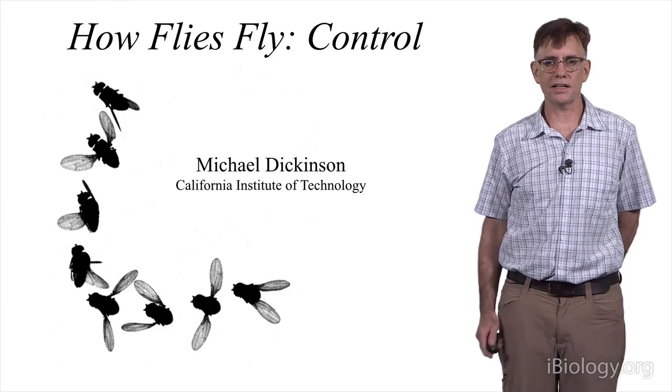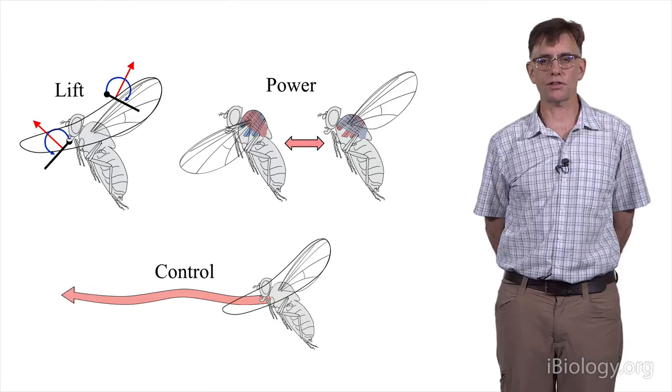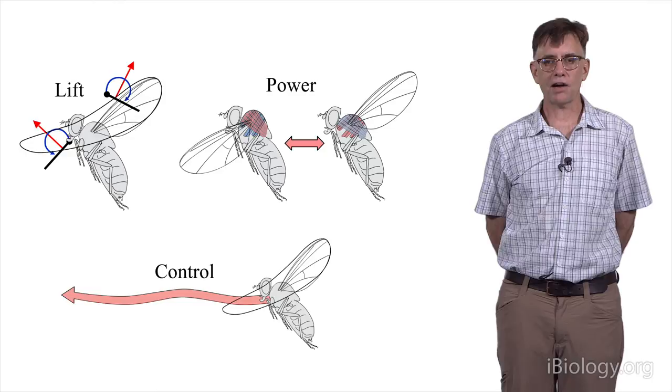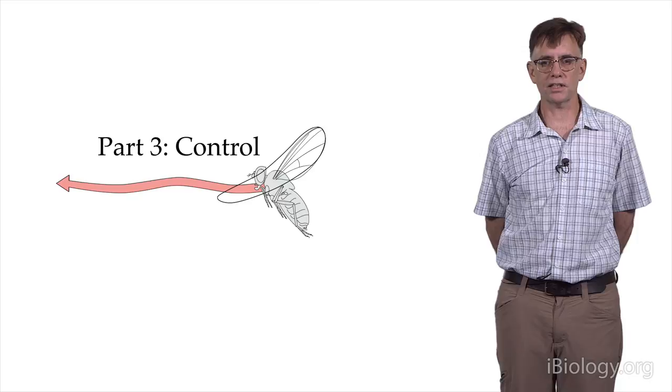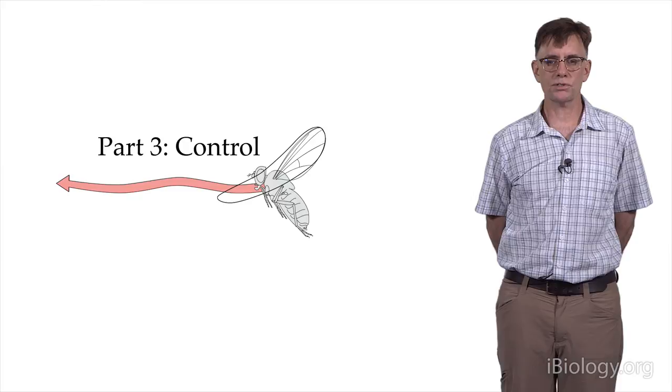In my first two lectures, I discussed the topics of lift, that is, how flapping wings generate aerodynamic forces, and power, how the muscles are able to flap the wings back and forth in these tiny insects. Now I'd like to focus on the third topic, which is control, how the animals are actually able to use sensory information to regulate the activity of the muscles to move through the world and perform the behaviors they need within their natural history.